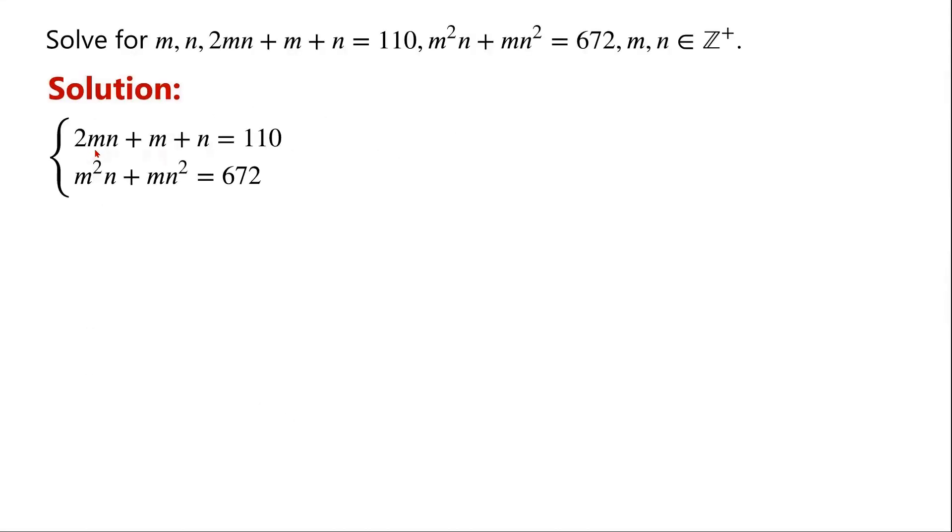The first equation has M, N and M plus N. The left-hand side of the second equation can be written as MN times M plus N. So we let X equal M plus N, Y equal MN.